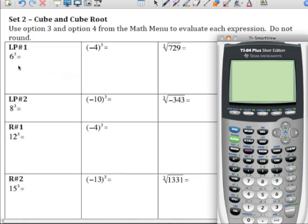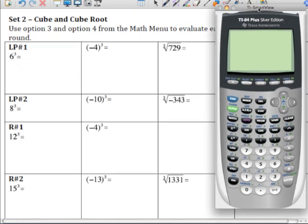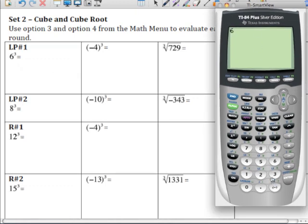So, the first expression that we're going to evaluate is 6 to the third power. To do that in your calculator, we're going to type in 6, hit the math menu, and there's option 3 is the exponent of 3, or the cube. So, let's choose choice 3.